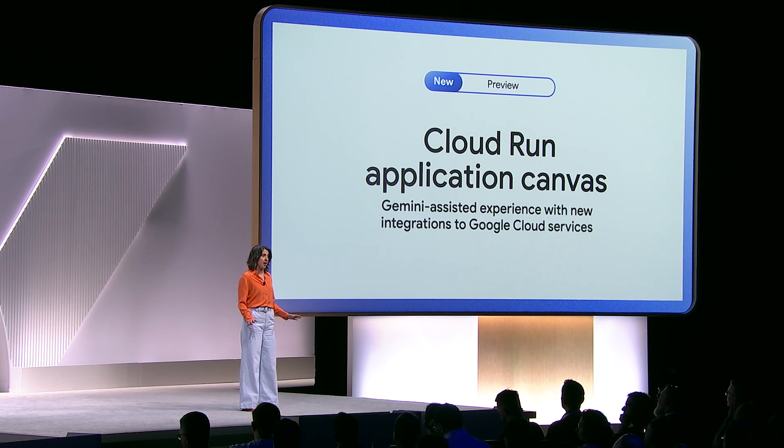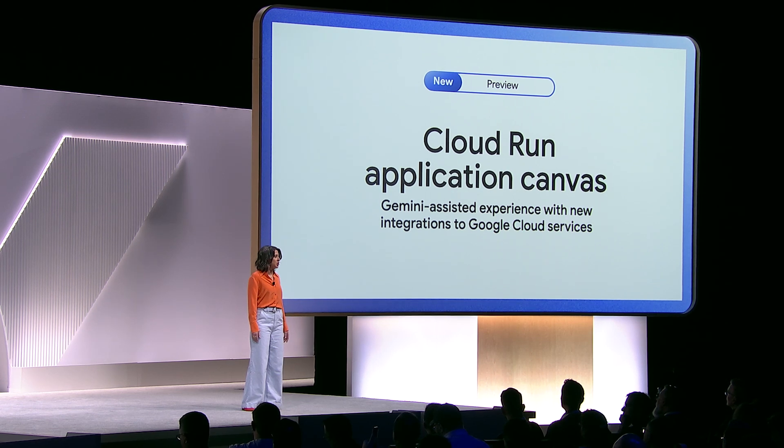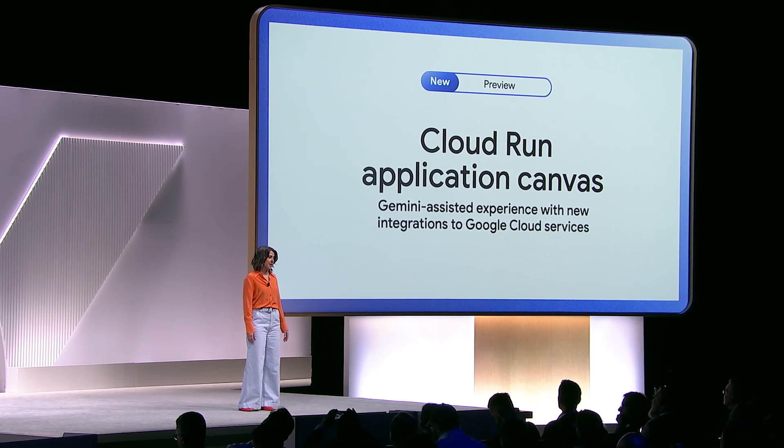Simply describe what you want to build in natural language, and the application will be generated for you. The Canvas also builds out integrations to various Google Cloud services, including Firebase Hosting, Vertex AI, Memory Store, and more — really saving you time and effort. We would like to keep things real, so let me invite Bobby from our product team for the first demo to see how easy it is.